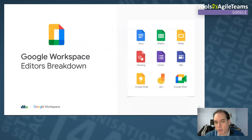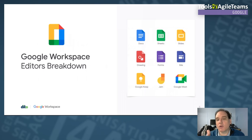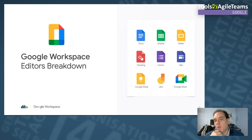Something a lot of people haven't caught up on is the concept of 'editors.' Google has nine editors under Workspace: Docs, Sheets, Slides, Drawings, Forms, Sites, Google Keep, Jamboard, and Google Meet. Google Keep and Google Meet have 'Google' in front to avoid confusion with other products on the market. You might wonder how Google Meet is an editor — we'll cover that as we go.